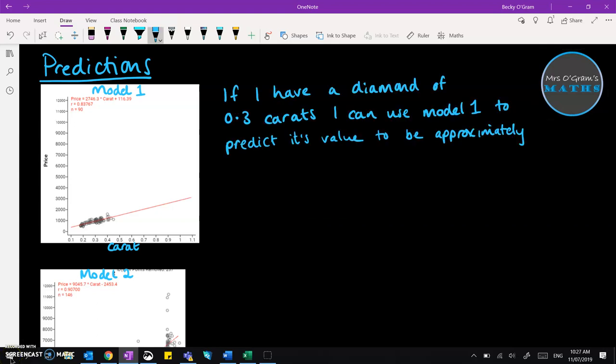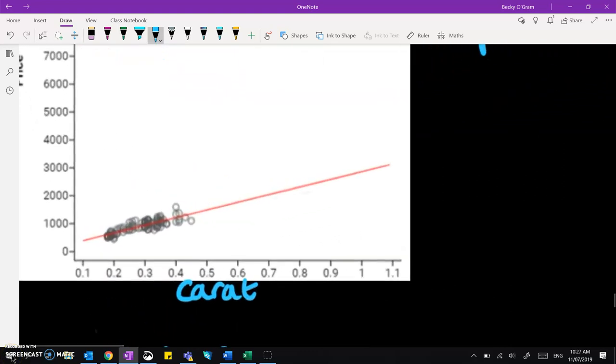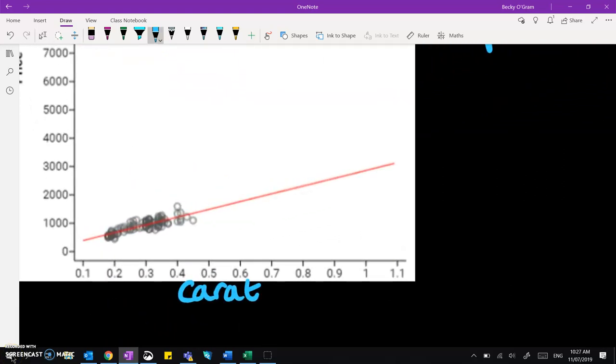For model one, I'm going to pick 0.3 carats. Then I know we're in the model one category and I can use that to predict the value to be approximately... We go over to our graph and first off, just do a visual line on here. You can actually draw this onto your graph and show what you've been doing.